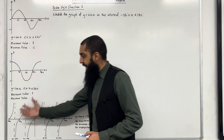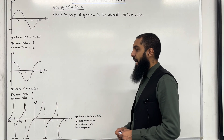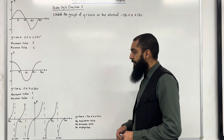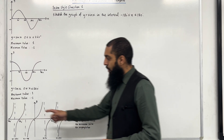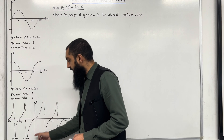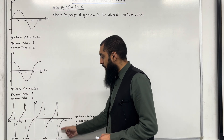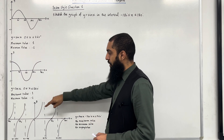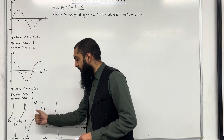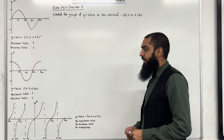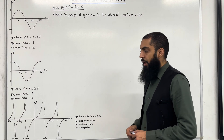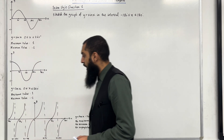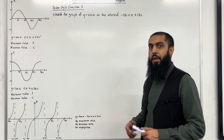Over here I've drawn the graph of y equals tan x for x between minus 360 degrees and 360 degrees inclusive. This graph has asymptotes at x equal minus 270 degrees, x equal minus 90 degrees, x equal 90 degrees, and x equal 270 degrees. There is no maximum value because the graph tends to infinity, and no minimum value because it tends to minus infinity. The graph is symmetrical and periodic, repeating itself every 180 degrees.